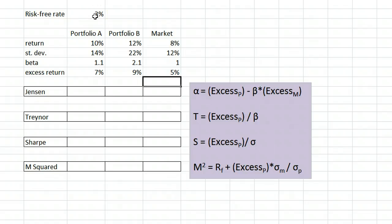Jensen's alpha is calculated by taking the portfolio's excess return and subtracting beta times the market's excess return. For portfolio A, we take its excess return 7 and subtract beta 1.1 times the market's excess return 5. That gives us positive 1.5%.